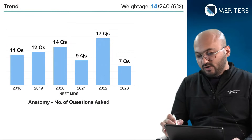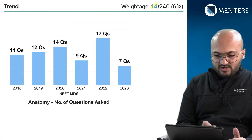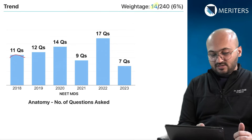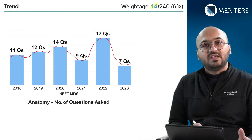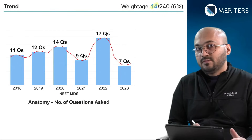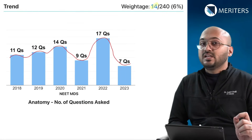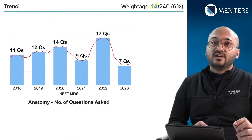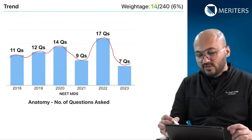On an average, 14 questions are expected in anatomy, but over the past few years we've seen a lot of variation in the distribution of questions. A maximum of 17 and a minimum of 7 questions can be expected, plus or minus two questions. It's an important subject to master and relatively difficult if you are not very confident with factual questions.